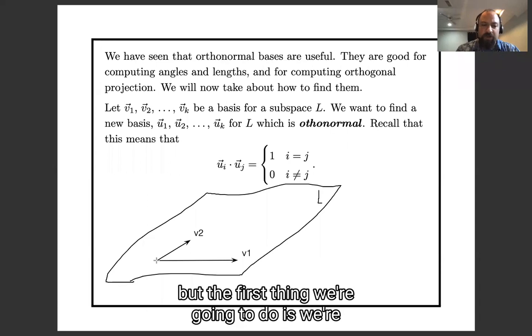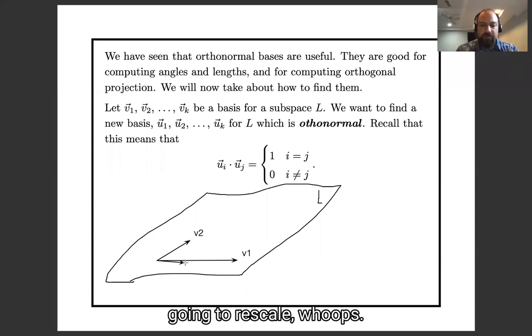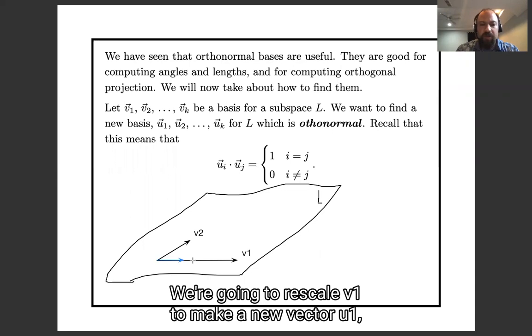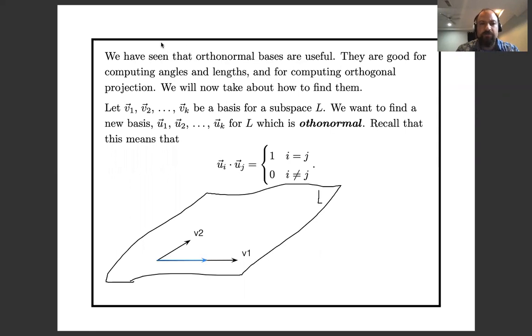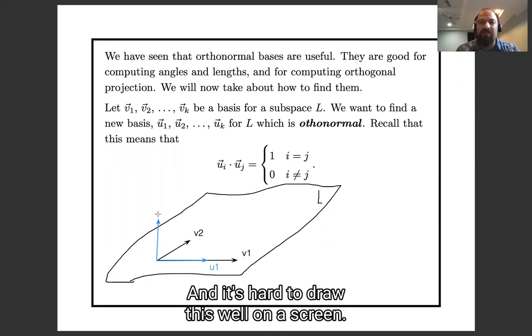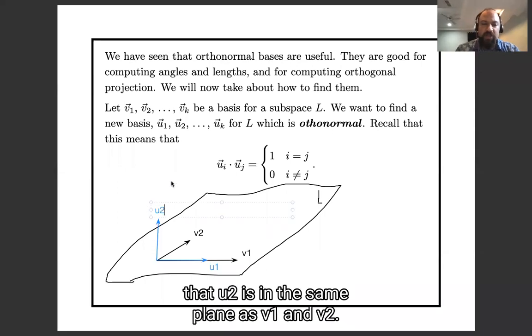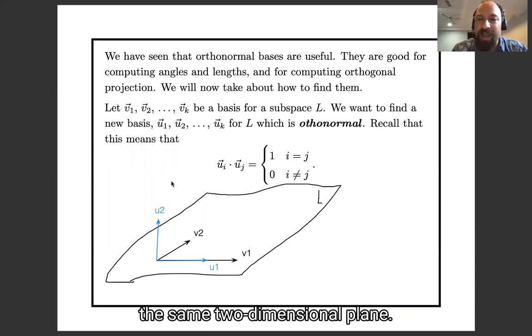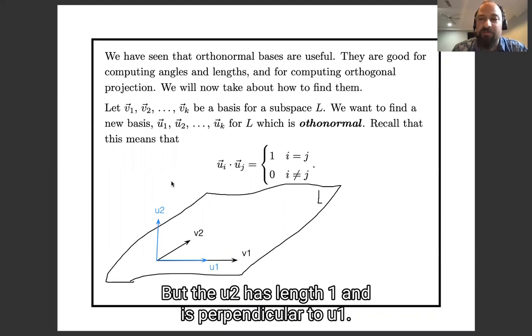So I'm going to get into the details, but the first thing we're going to do is we're going to rescale v1 to make a new vector u1, which will have length one. And then after we do that, we're going to make another vector u2, which also has length one and is perpendicular to u1. And it's hard to draw this well on a screen, but I am trying to draw that u2 is in the same plane as v1 and v2. All of these things are in the same two-dimensional plane, but that u2 has length one and is perpendicular to u1.